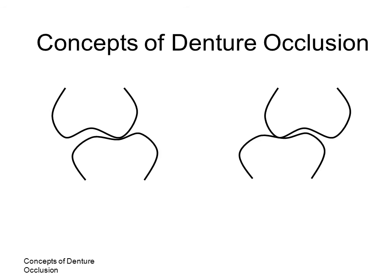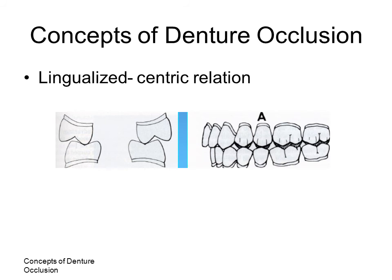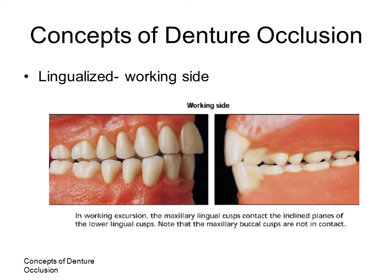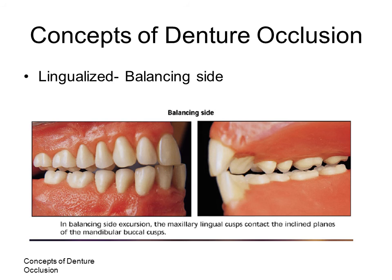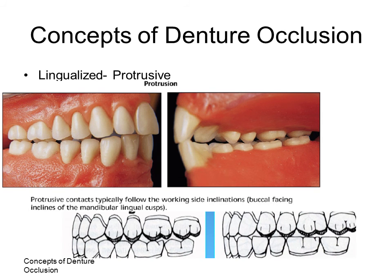In each theory of occlusion there is simultaneous bilateral contact in centric relation. The anterior teeth do not touch in centric relation and make only brushing contact in eccentric movements. The slide illustrates the position of the teeth in centric relation for the lingualized scheme, where the mandibular tooth is of a semi-anatomic type implying a balanced type occlusion. The slides also illustrate the position of the teeth on the working side, balancing side, and in protrusion for the lingualized scheme.